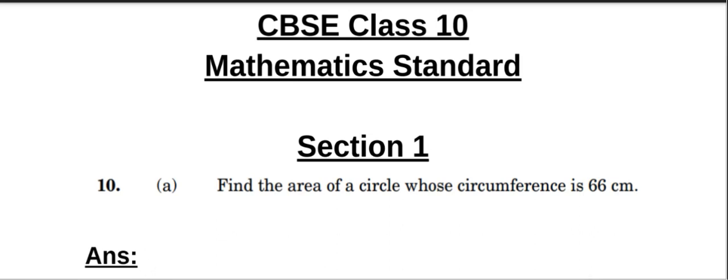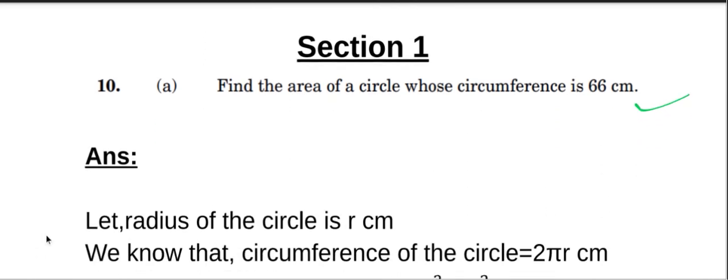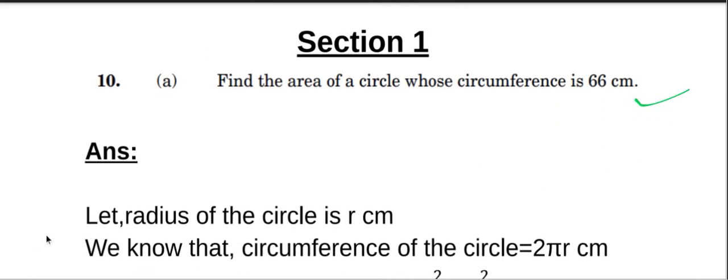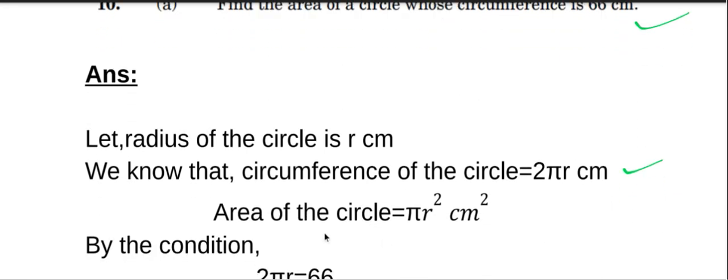Question number 10a: find the area of a circle whose circumference is 66 centimeters. Let the radius of a circle be r centimeters. The formula for circumference of a circle is 2πr centimeters, and the area of a circle is πr² centimeters square.